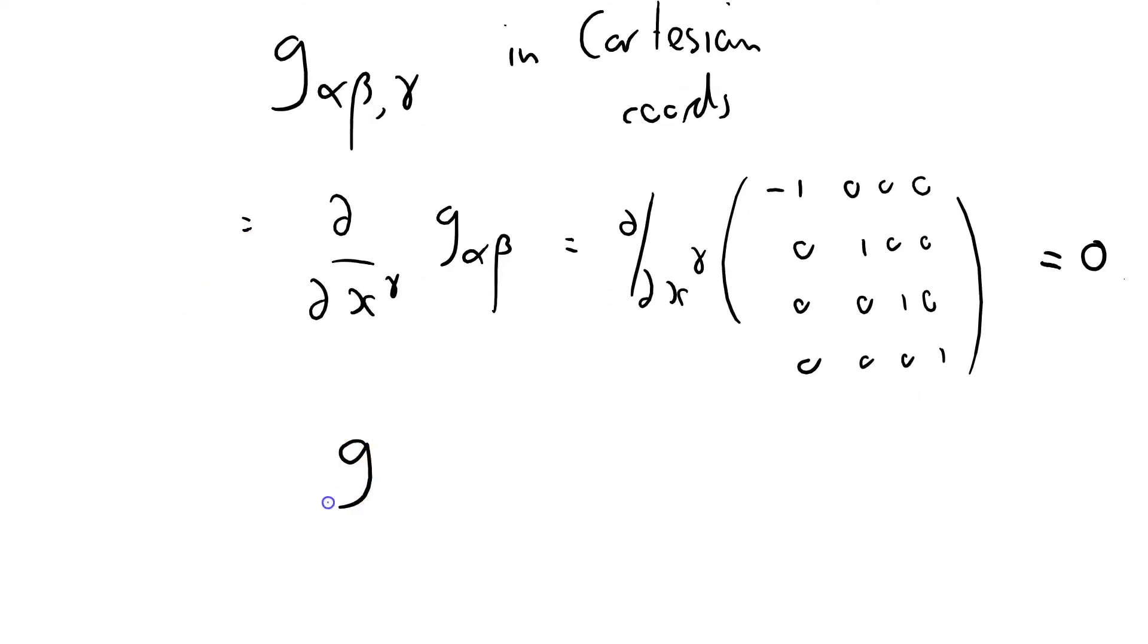So let me just express that. G alpha beta comma gamma equals zero. Well of course it is because this is a constant matrix. There's just numbers in there. There's no dependence on position. Well of course there isn't because it's a flat Minkowski metric. And so this is kind of obvious.